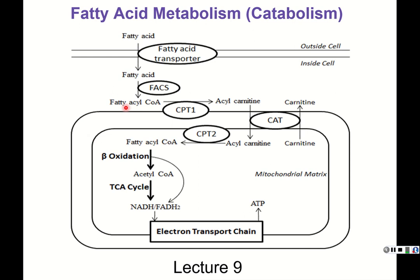First, we'll talk about how fatty acids are mobilized and moved around the body, and how they are activated by adding coenzyme A to them. Then an enzyme called CPT1 changes that fatty acyl-CoA into an acyl-carnitine — it attaches carnitine so it can be transported into the matrix of the mitochondria. On the inside, a similar enzyme operates in reverse, removing the carnitine and changing it back to fatty acyl-CoA, which then undergoes beta oxidation.